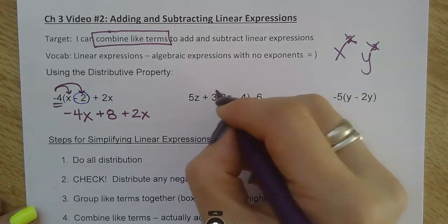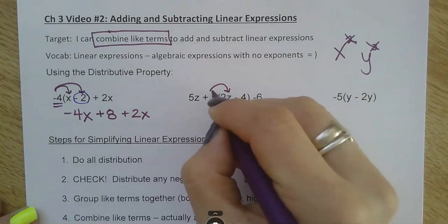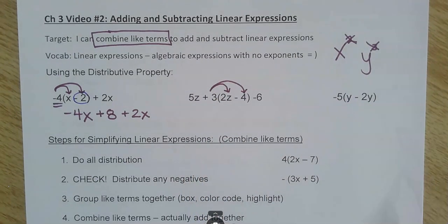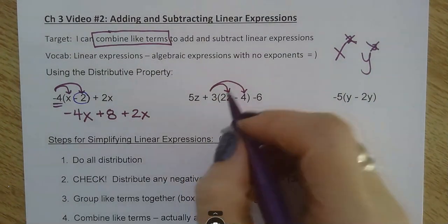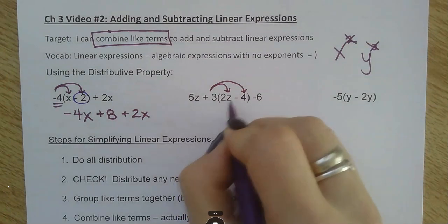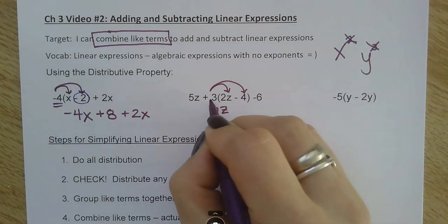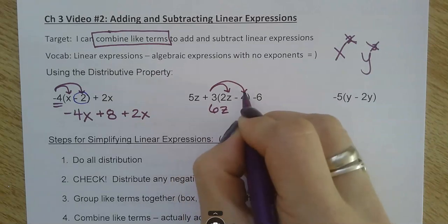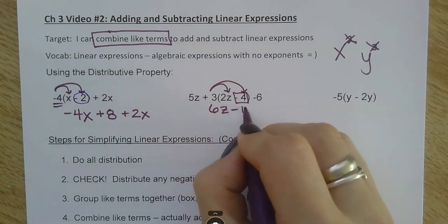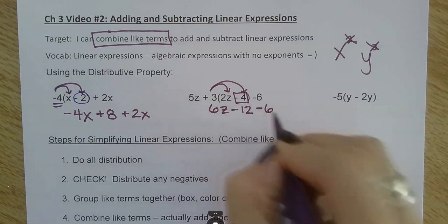Let's do another one. I'm going to draw my arrows. I see this three in front of the parentheses, so I need to multiply by everything inside the parentheses and do that first. Three times two z is six z. Three times negative four is negative twelve, and then bring everything else down.